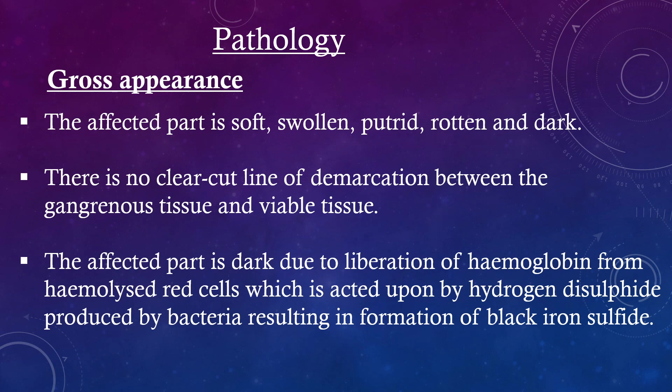Pathology — Gross appearance: The affected part is soft, swollen, putrid, rotten and dark. There is no clear-cut line of demarcation between the gangrenous tissue and viable tissue. The affected part is dark due to liberation of hemoglobin from the hemolyzed red cells, which is acted upon by hydrogen disulfide produced by bacteria, resulting in formation of black iron sulfide.